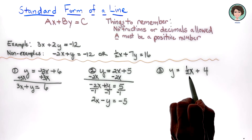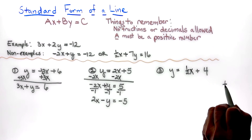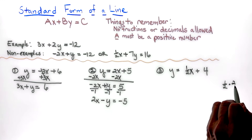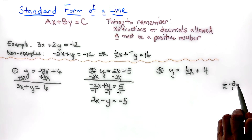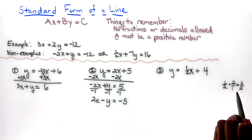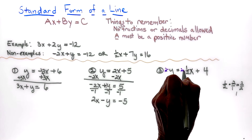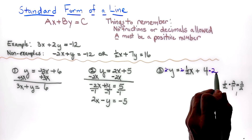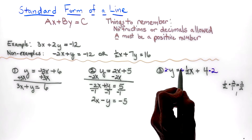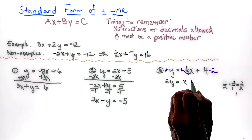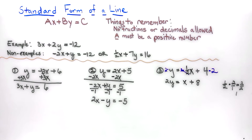For the last one, I see a fraction — one-half. To eliminate it, I multiply by the reciprocal: one-half times 2 equals 1. So I multiply every term by the whole number 2. The two-halves cancel and I end up with 2y equals x plus 8.